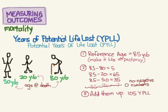For this group of four people, we simply add up all those differences and get 105 years of potential life lost. You can see that if a younger person dies prematurely, their loss contributes more to this value. This makes YPLL really good at focusing on things that kill young people if you want to emphasize premature mortality.